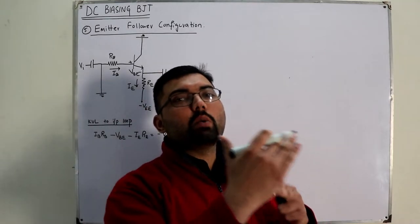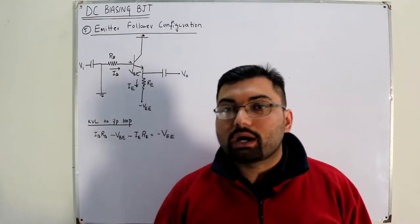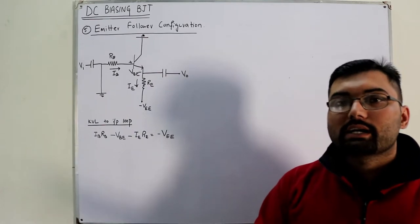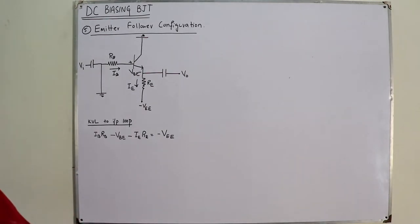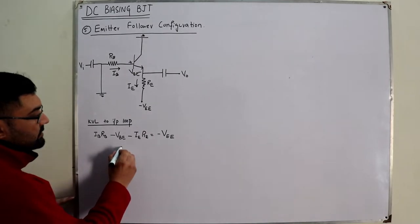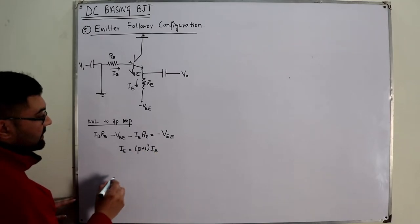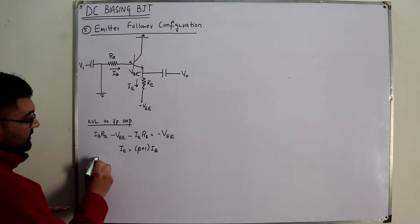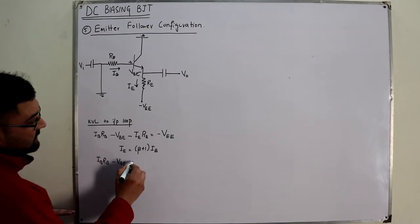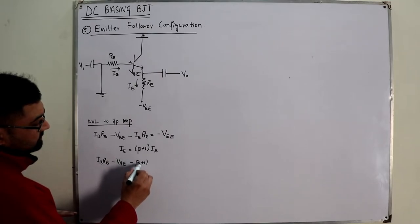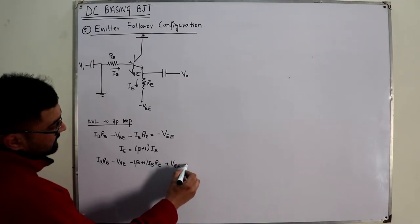A positive VCC means it is positive with respect to ground. A negative VEE means it is negative with respect to ground, so the ground acts as a positive terminal. We can substitute IE = (β + 1)·IB. So the KVL equation becomes: IB·RB − VBE − (β + 1)·IB·RE + VEE = 0.